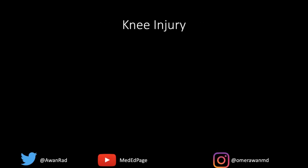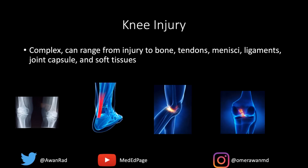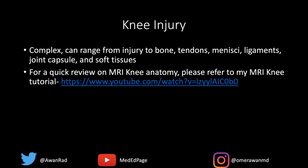Knee injury can be very complex. You can have injury to the bone, injury to tendons, the meniscus can be torn, ligaments can be torn as you saw in this index case, the joint capsule can be injured, and the soft tissues like the muscle can have injury associated with them. For a quick review of MRI knee anatomy, please refer to my MRI knee tutorial — in about 15 minutes, I go over all the anatomy you need to know when reading MRI.